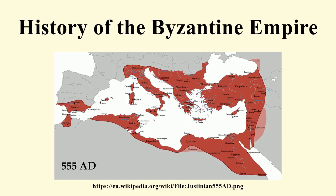Thus, although it continued the Roman state and maintained Roman state traditions, modern historians distinguish Byzantium from ancient Rome insofar as it was oriented towards Greek rather than Latin culture, and characterized by Orthodox Christianity rather than Roman polytheism. The borders of the Empire evolved significantly over its existence as it went through several cycles of decline and recovery.